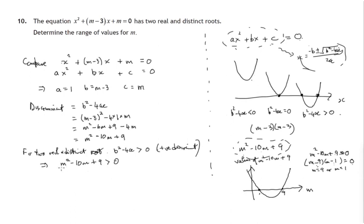We're concerned with when the values of m squared minus 10m plus 9 are greater than zero — in other words, where is this parabola above the m-axis? That occurs for values of m less than 1, not including 1, and for values greater than 9, not including 9. So the answer is m less than 1 or m greater than 9. That's the range of values of m which make the discriminant greater than zero, and hence the equation has two real and distinct roots.